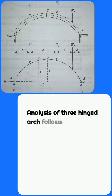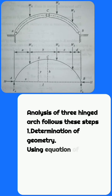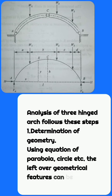Analysis of a 3-Hinged Arch follows these steps. Step 1: Determination of geometry. Using the equation of a parabola, circle, etc., the remaining geometrical features can be determined easily.